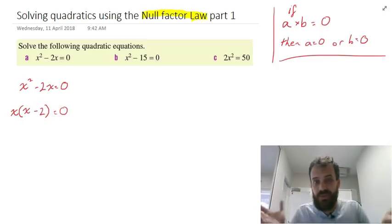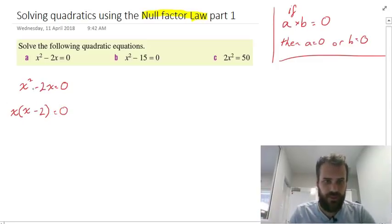So now you might be thinking, what's this got to do with the Null Factor Law? Well, this is x times (x - 2). So in other words, this is our a value, x, times our b value, x - 2.